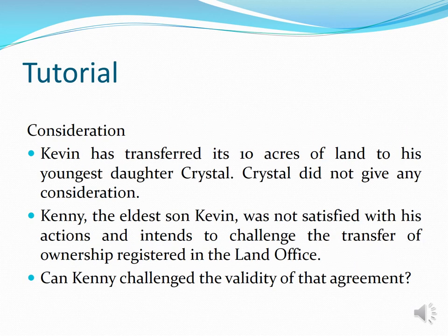To sum up, intention to create legal relation is one of the elements needed to form a binding contract. Since there is nothing in the Contracts Act, we refer to common law — the cases. There are two ways to determine whether intention exists: first, the objective test — the reasonable man test; and second, presumption based on type of agreement. For family, the presumption is no intention; for commercial, the presumption is that there is intention. Any party who says otherwise must rebut the presumption.